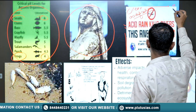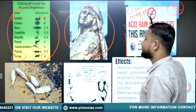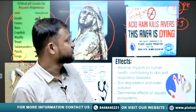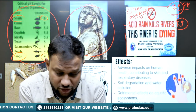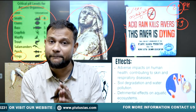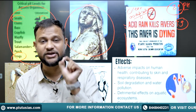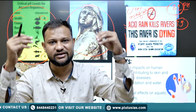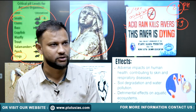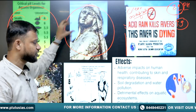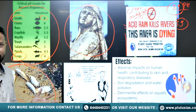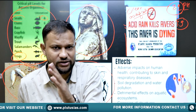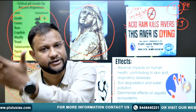Ocean acidification is particularly concerning. The average pH of the ocean is 8.1, but it has now declined to 7.9 — a drop of 0.2. When you consider that the ocean covers 71% of the earth's surface, even a 0.1 change requires an enormous amount of acid. This excess acid concentration in the ocean is a growing problem for humanity. Furthermore, acid rain can lead to bioaccumulation and biomagnification, entering the food chain and introducing secondary pollutants that cause further issues.